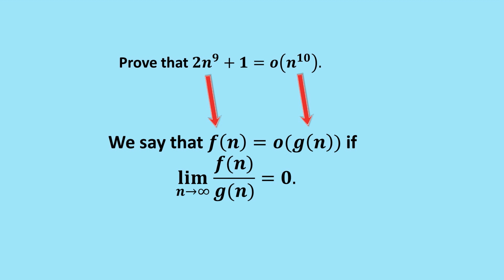We can go to the definition and we say that f(n) equals small o of g(n) if the limit as n goes to infinity of f(n) divided by g(n) equals 0. Informally, this is saying that as n gets larger, the value of f(n) becomes an insignificant proportion of g(n).